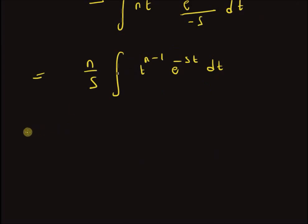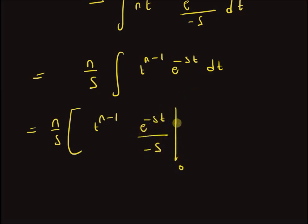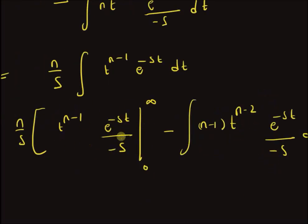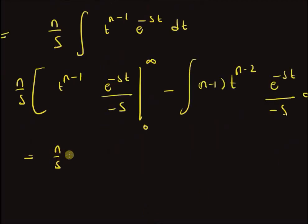This new integral is again evaluated using integration by parts. We get n/s multiplied by: t^(n-1)·e^(-st)/(-s) evaluated from 0 to infinity, minus the integral of (n-1)·t^(n-2)·e^(-st)/(-s) dt. Again this boundary term equals zero, and we are left with n/s × (n-1)/s, where the minus signs in numerator and denominator cancel each other.